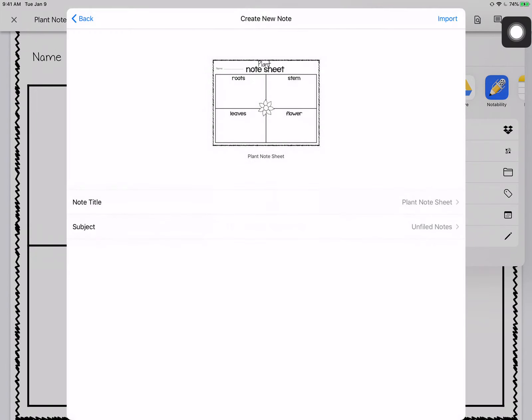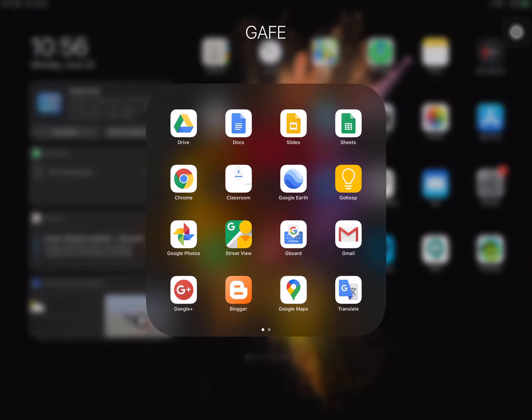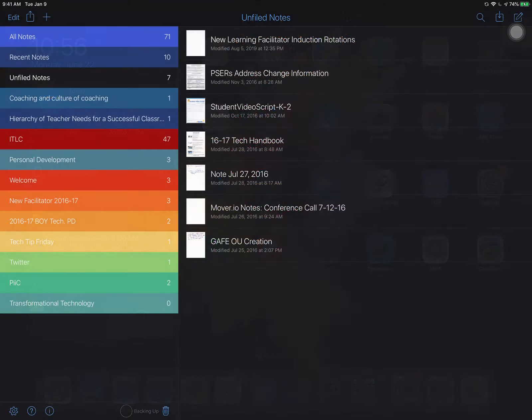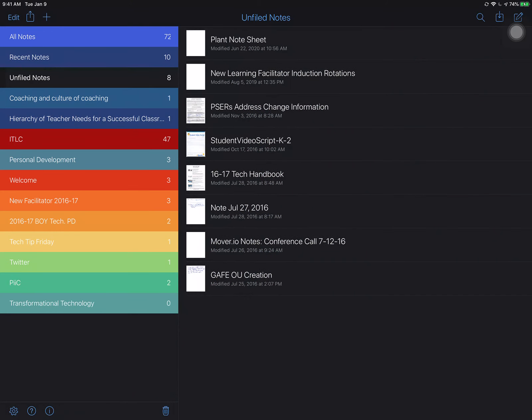Once you've done that, tap Done. You can exit the PDF, find Notability, go ahead and open it. And there is my plant note sheet.